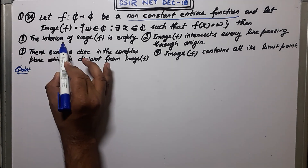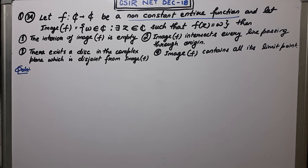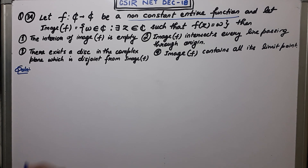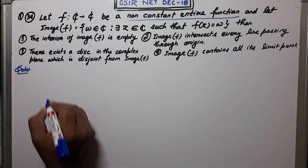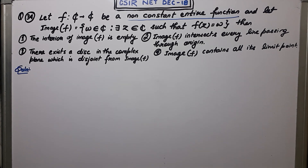Now, what are the options? The first option says the interior of image f is empty. The second option says image f intersects every line passing through the origin. The third option says there exists a disk in the complex plane which is disjoint from image f. The fourth option says image of f contains all its limit points.